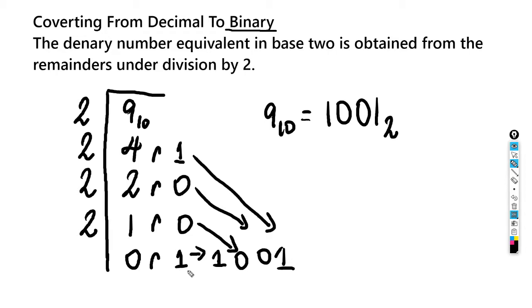So this is how we always do it guys — we basically read it from bottom up. This number is first, this one is second, this one is third, and this one is fourth. We always go bottom up when we're converting from decimal to binary.